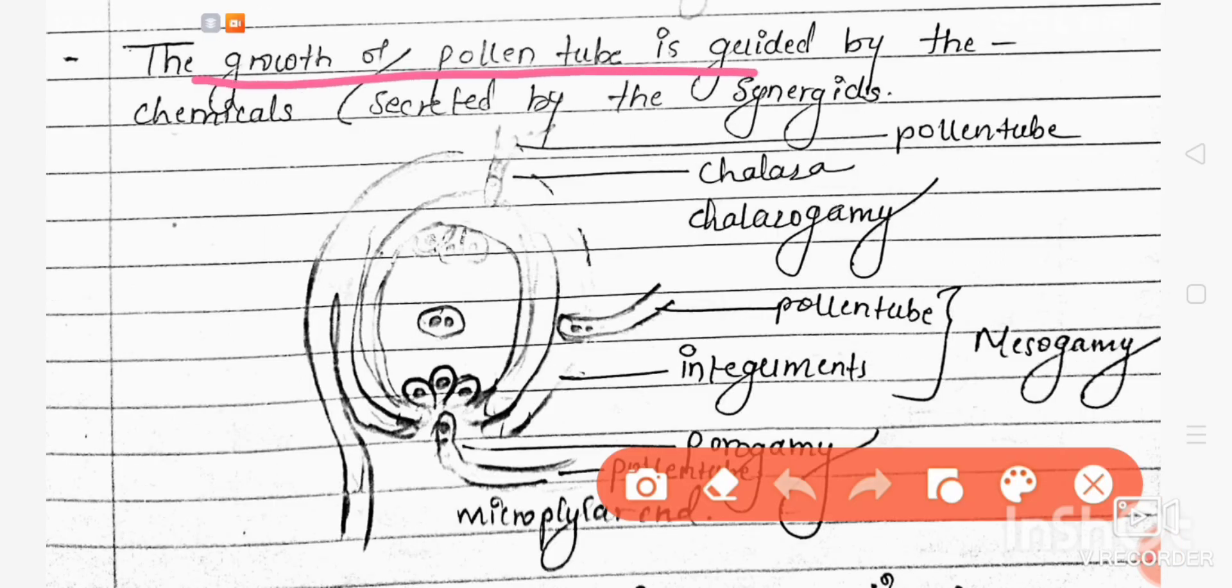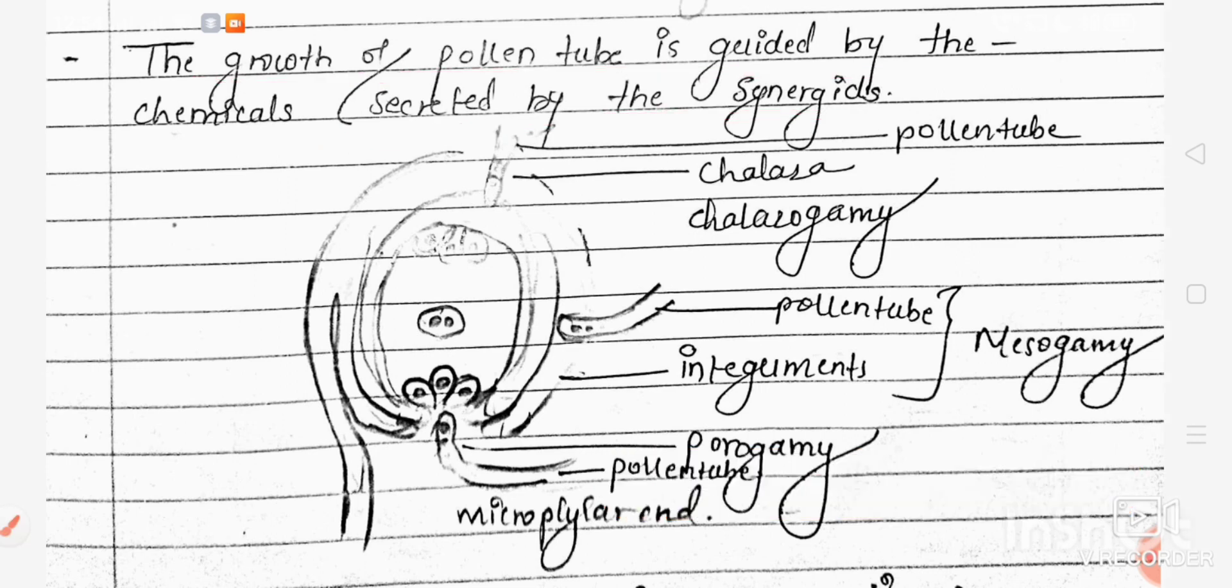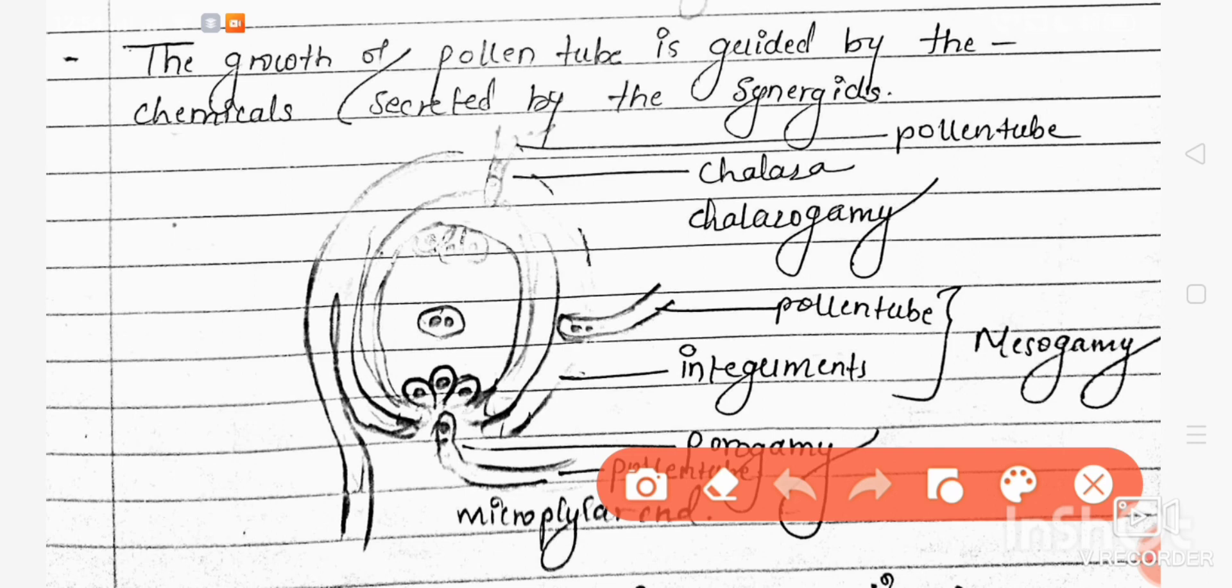The growth of pollen tube is guided by the chemicals secreted by the synergids. Now when it reaches the ovule, the pollen tube can enter by three ways into the ovule.